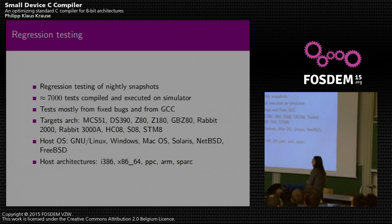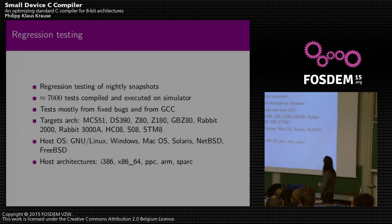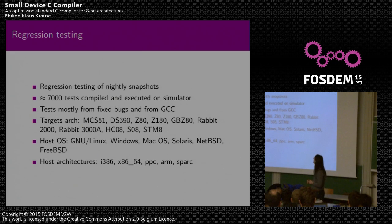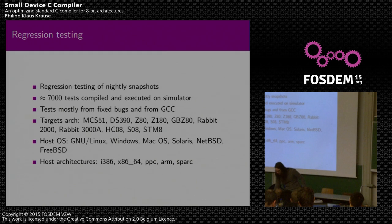We do regression testing to ensure good quality and avoid too many bugs. Every night, a snapshot from Subversion is compiled for various host architectures. We compile about 7,000 regression tests and execute them on simulators. The tests come from different sources — some written by feature implementers, but most are regression tests for bugs that used to exist, or tests taken from GCC. This helps reassure users that if code works on GCC, it will likely work on SDCC as well, within the bounds of the target architectures.